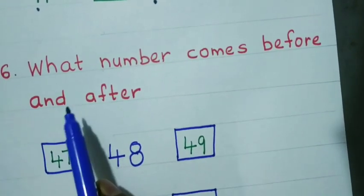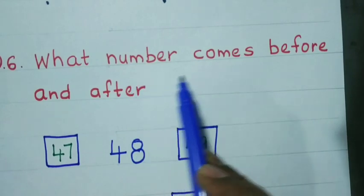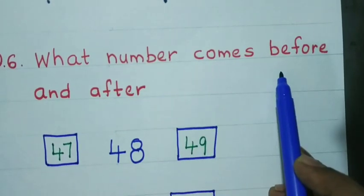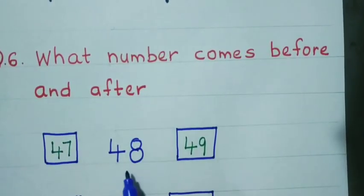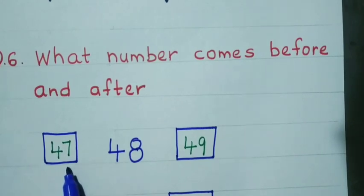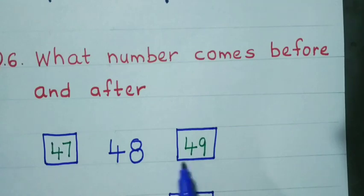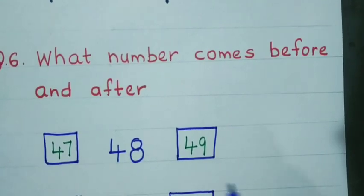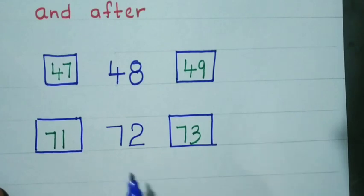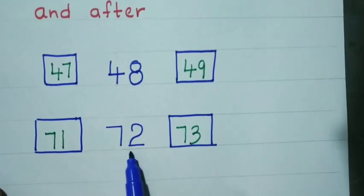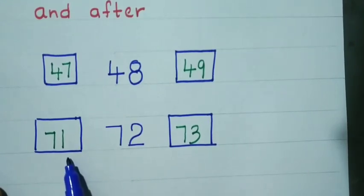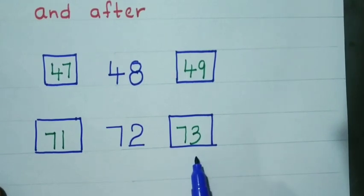Question number 6: What number comes before and after? 48 is given. The before number will be 1 less than 48, that is 47. The after number will be 1 more than 48, that is 49. Similarly, for 72: the before number is 71 and the after number is 73.